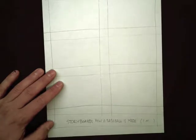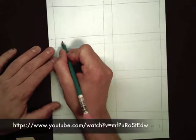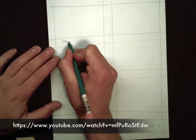To start, grid off your first sheet in six boxes. Four or eight work as well depending on the detail you are trying to present.